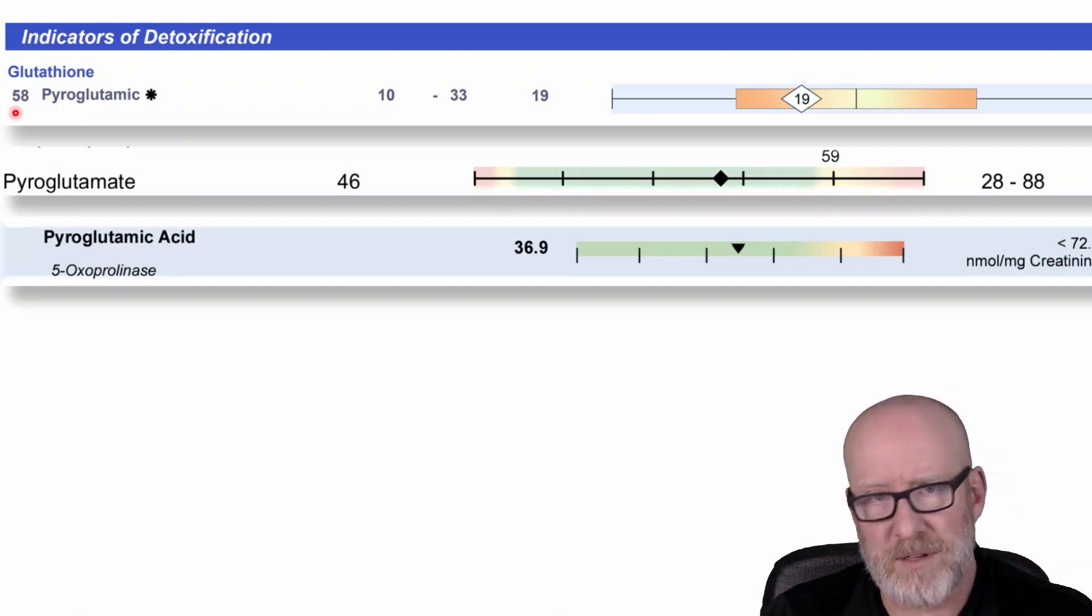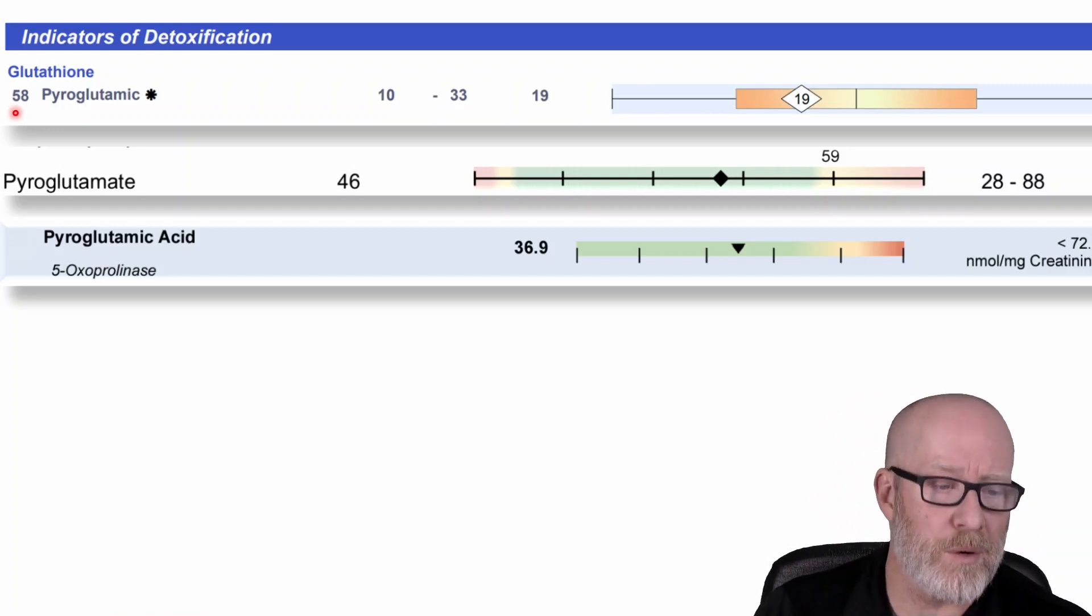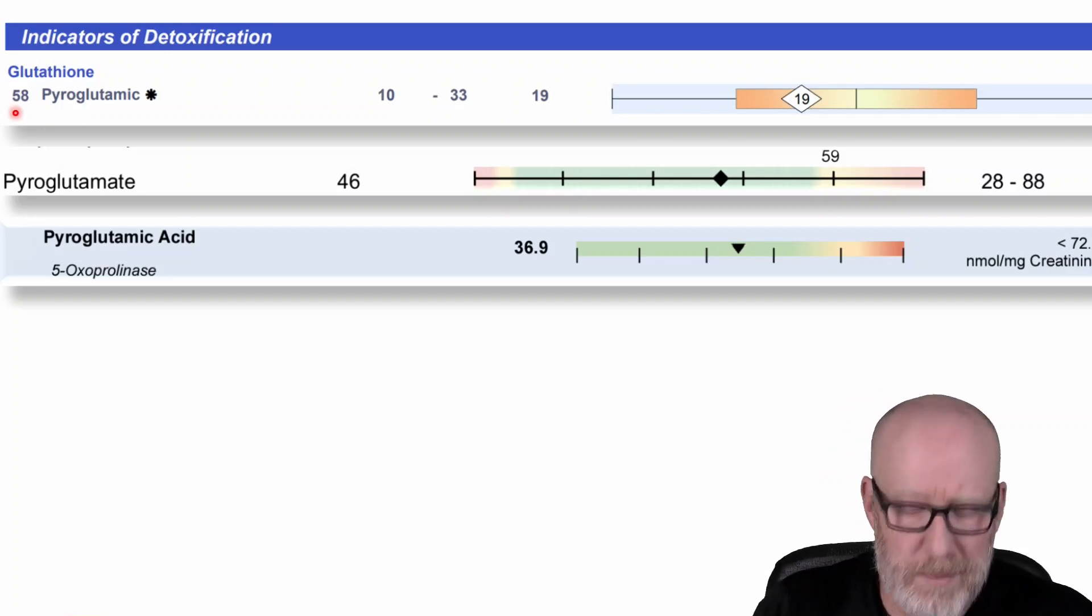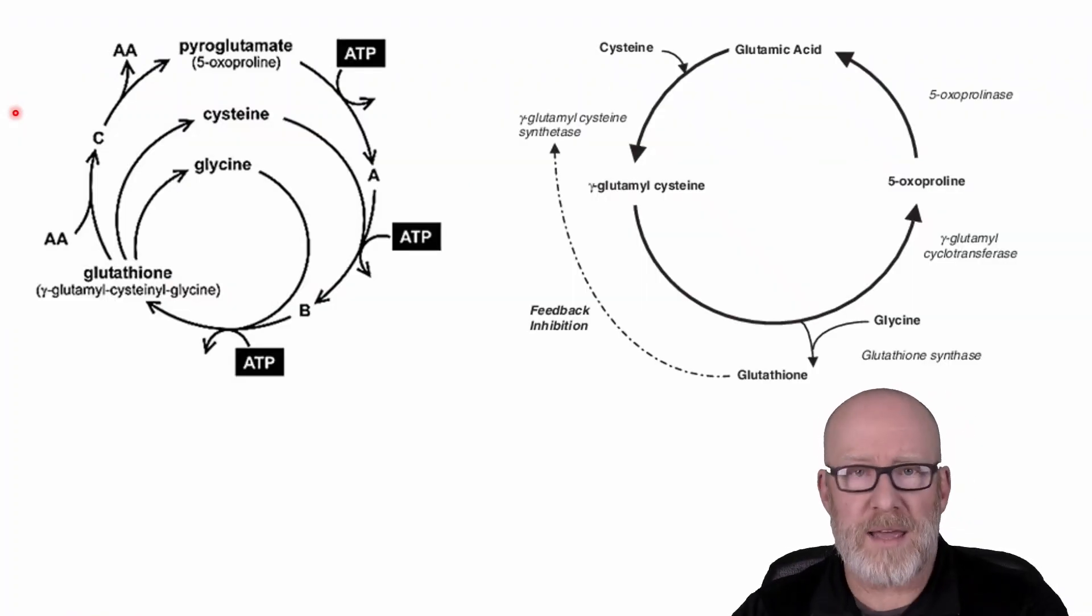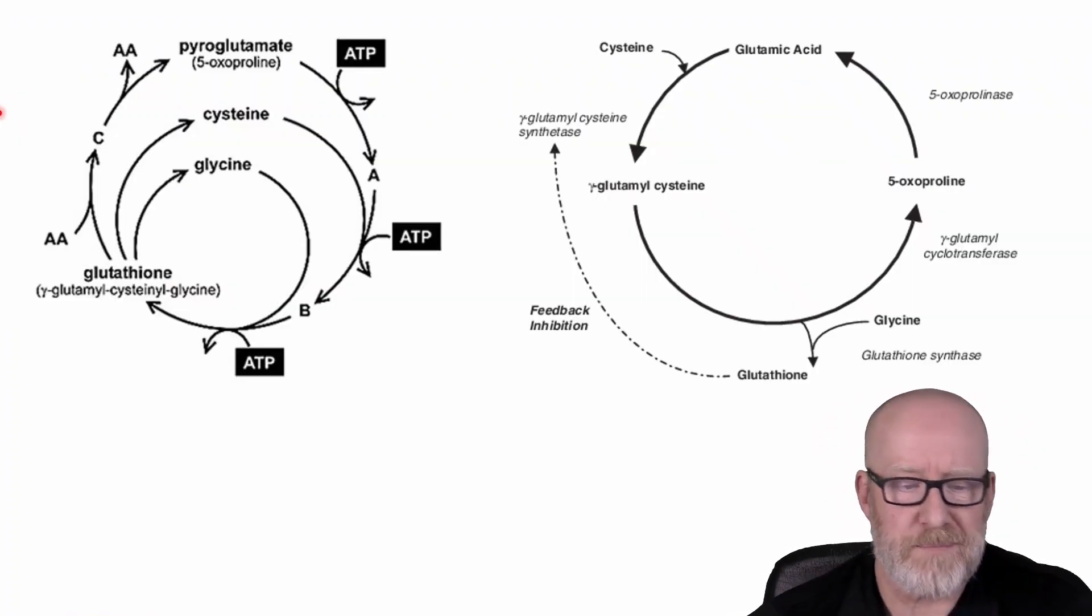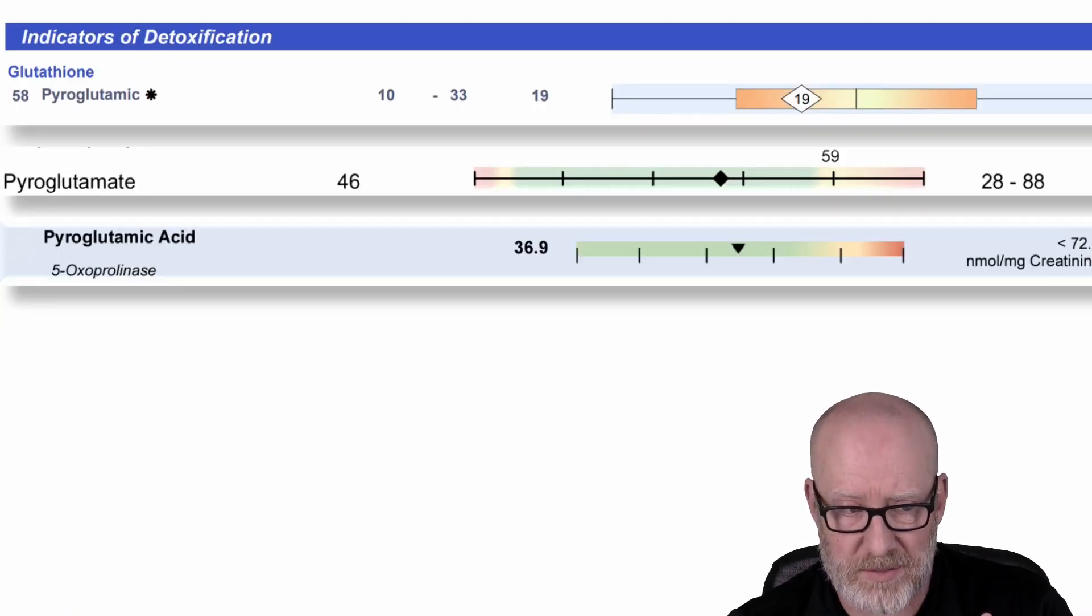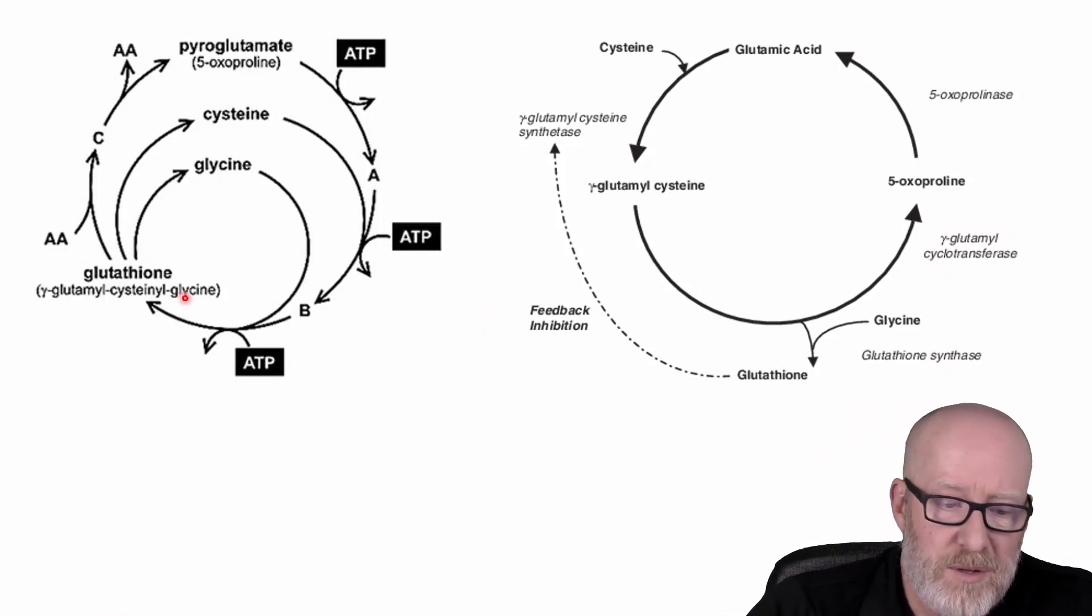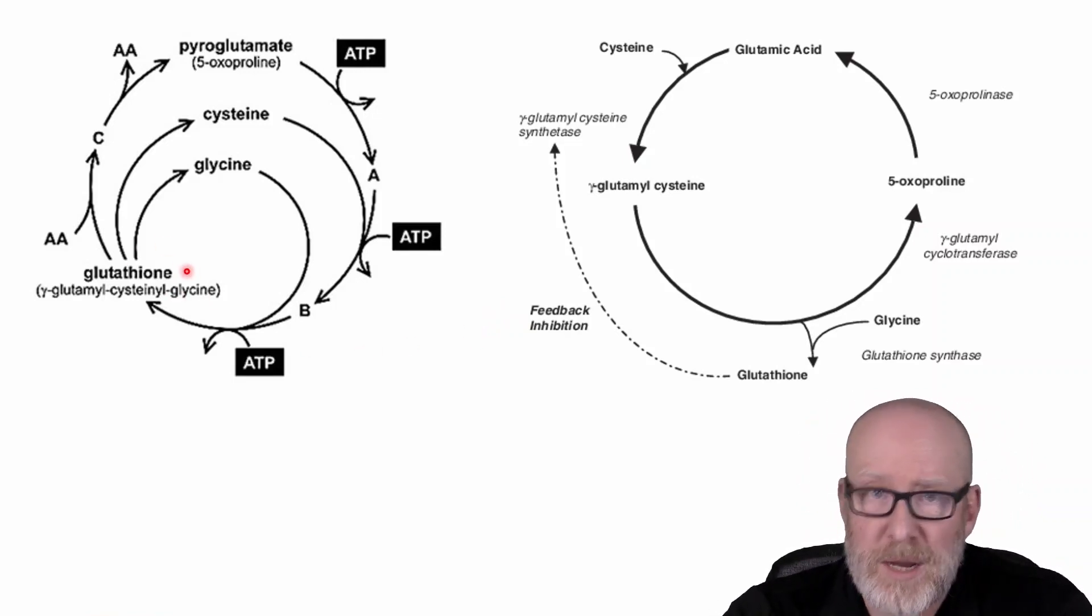There's a marker called 5-oxyproline or pyroglutamic acid or pyroglutamate. This is just examples from different labs that offer it and kind of how they show you, but it's the same thing. It's this marker called pyroglutamic acid or pyroglutamate. Why is that a marker of glutathione deficiency? Supposedly. Well, and notice it says glutathione.